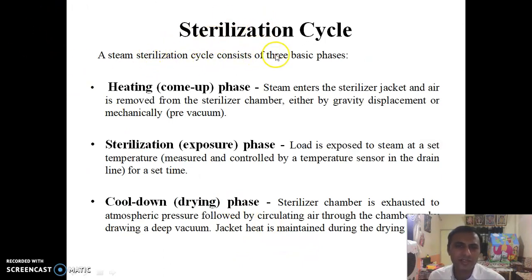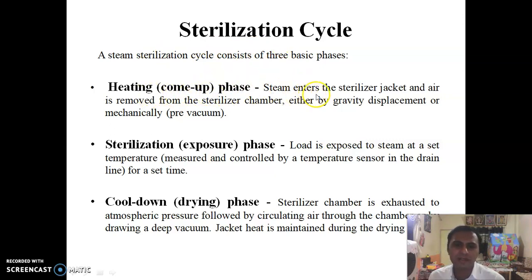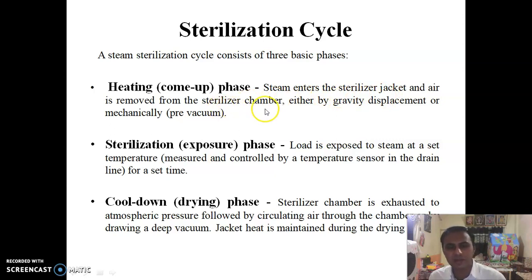The sterilization cycle usually consists of three phases. First, the heating phase: steam enters the sterilizer jacket and air is removed from the sterilizer chamber either by gravity displacement or mechanical means.